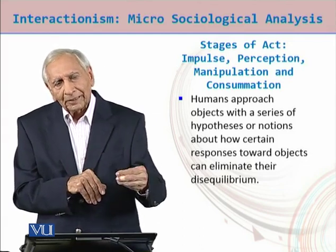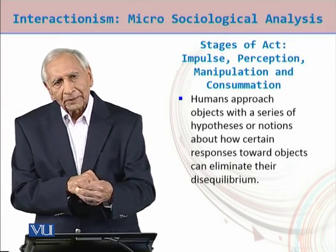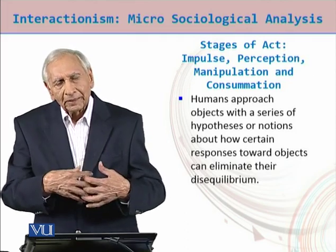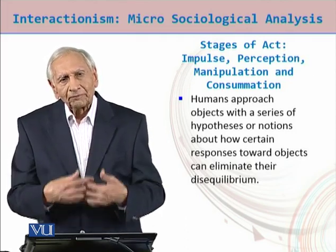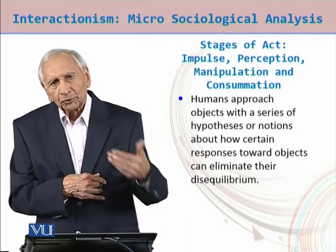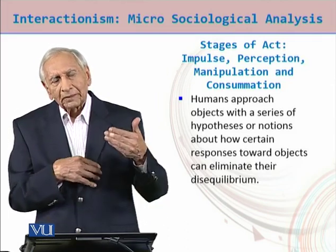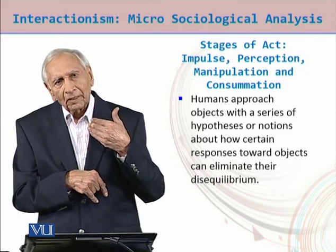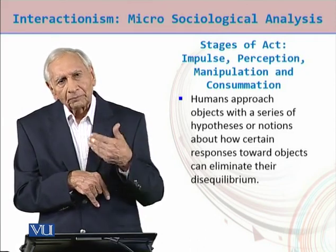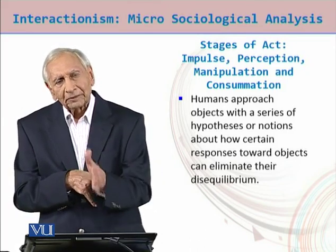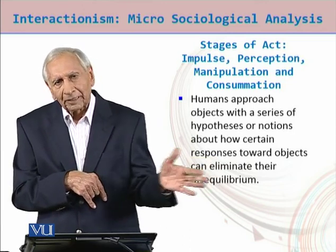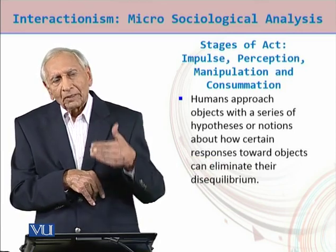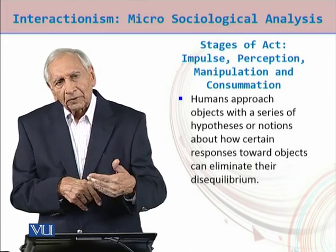The possibility exists — this could happen, that could happen — but is it permissible? This determines how a person perceives the possibility of using a particular response: is it a permissible response for the satisfaction of the impulse, which in the beginning makes the person move in a certain direction and take steps toward the achievement of that goal.